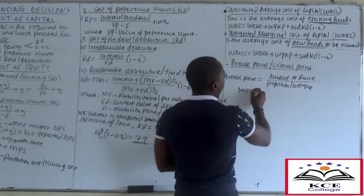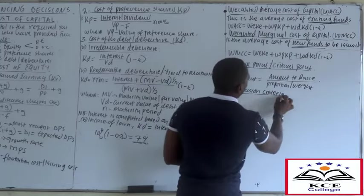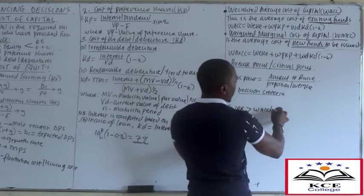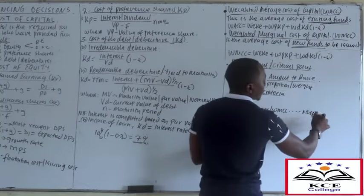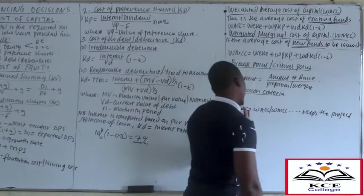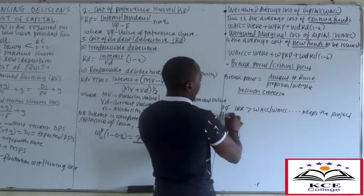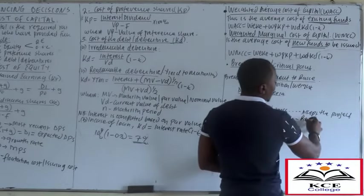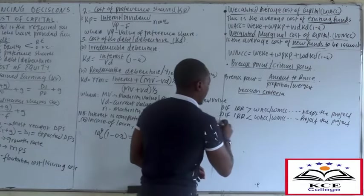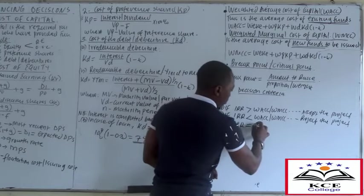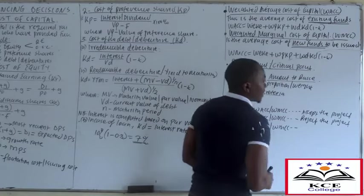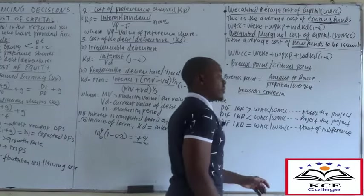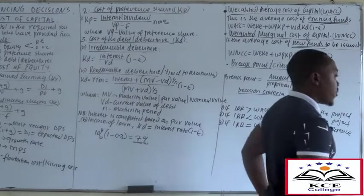Decision criteria: If IRR is greater than WACC or WMCC, accept the project. If IRR is less than WACC or WMCC, reject the project. If IRR equals WACC or WMCC, that's the point of indifference - depending on the risk appetite of the company, you can either accept or reject the project.